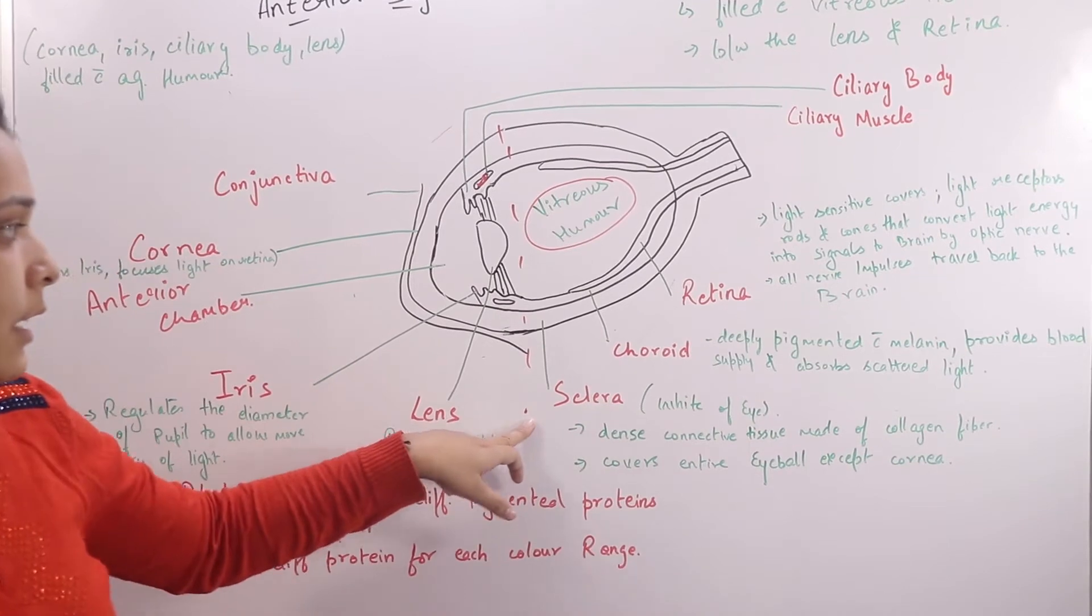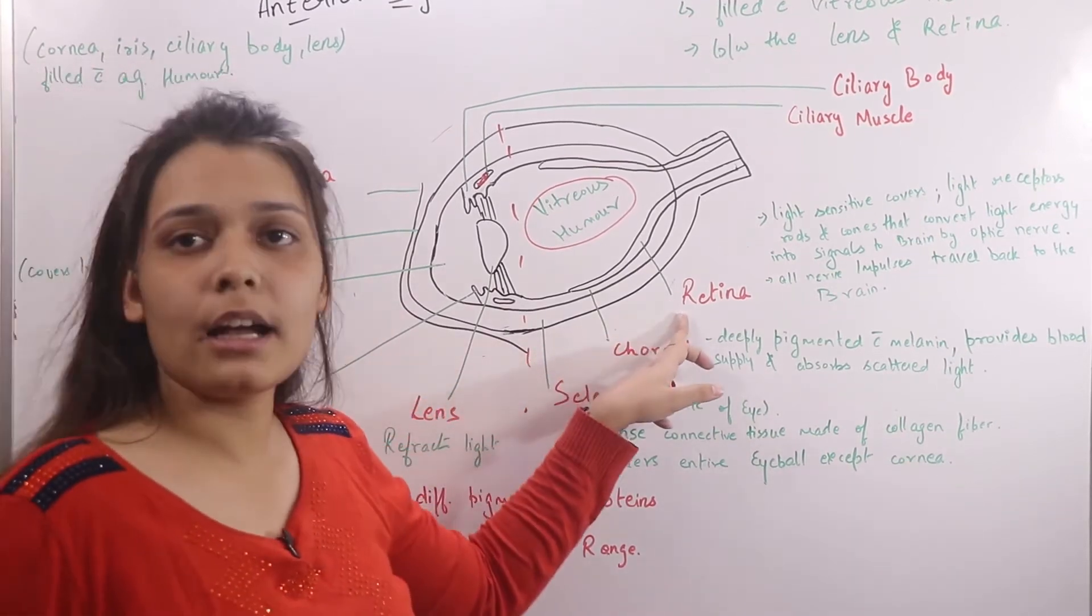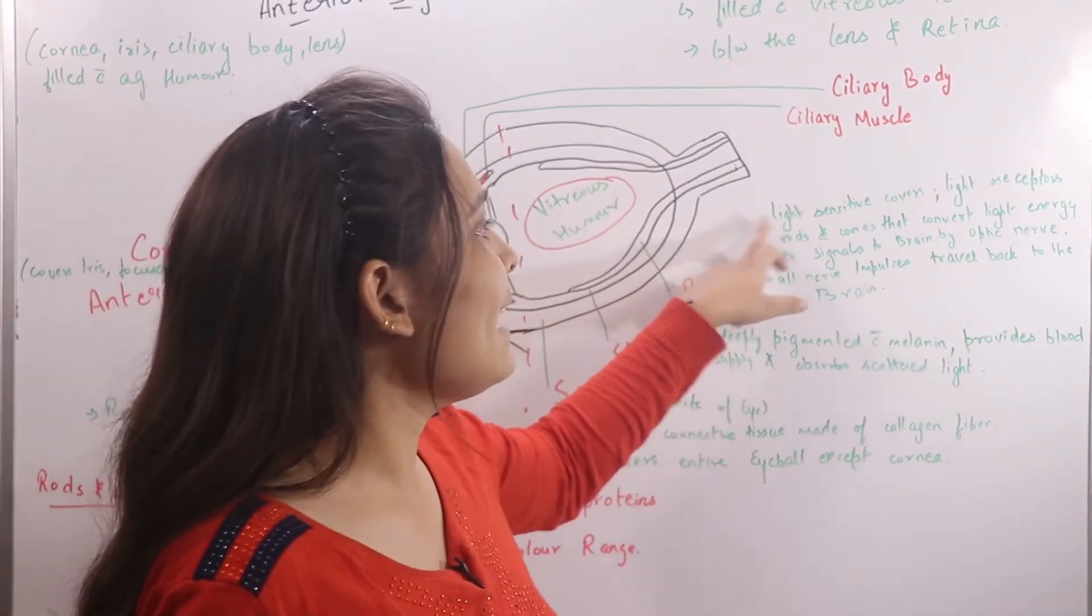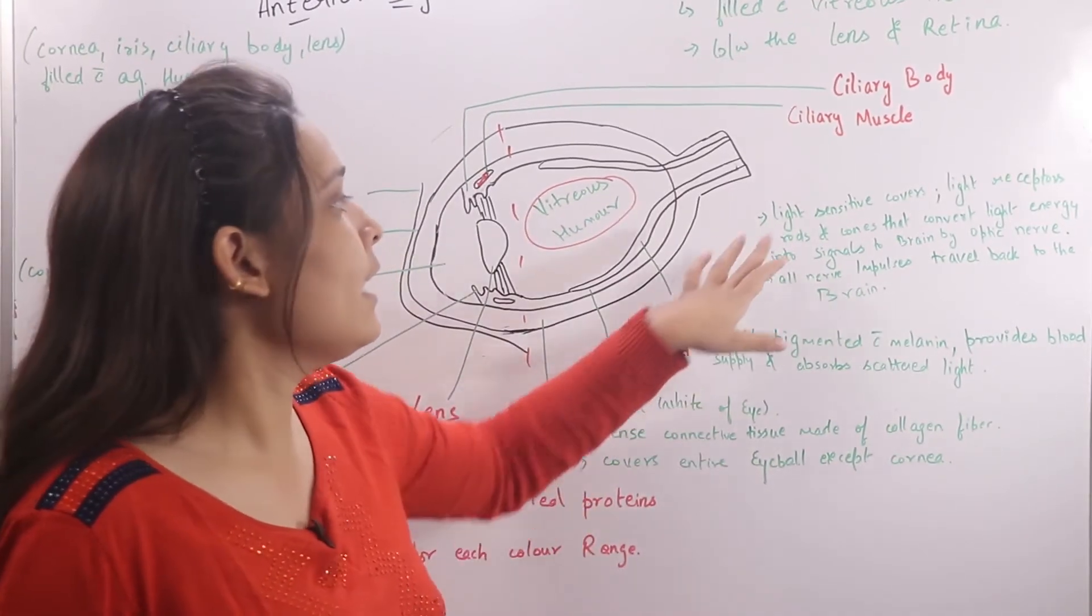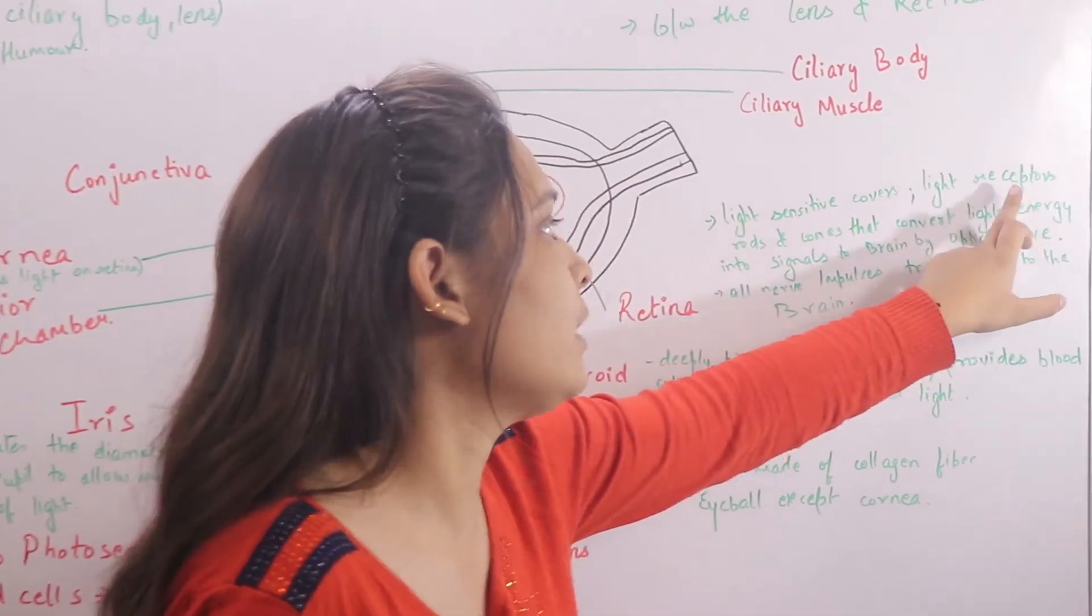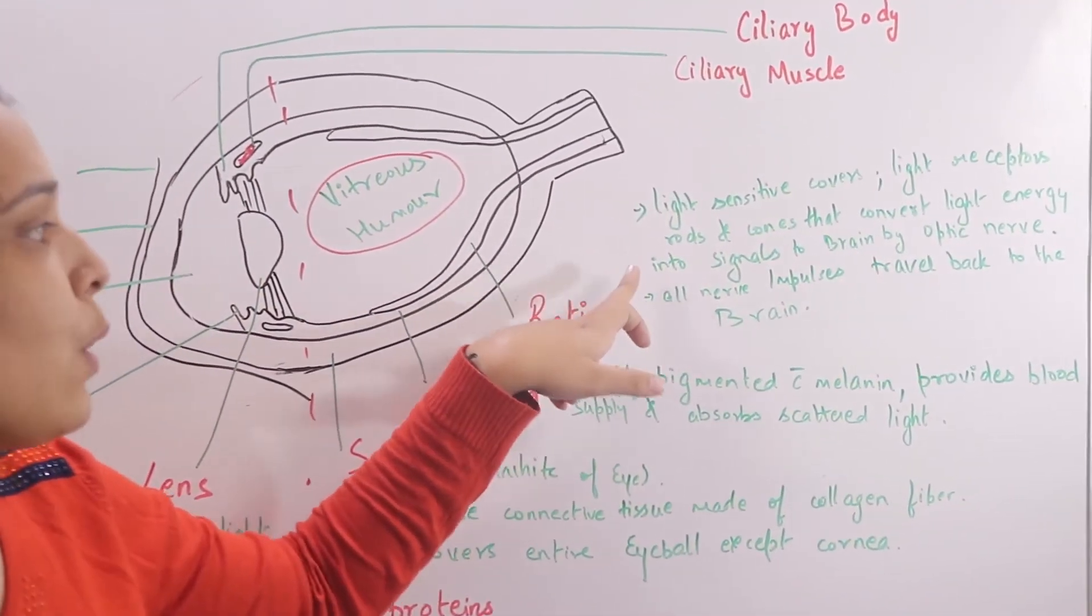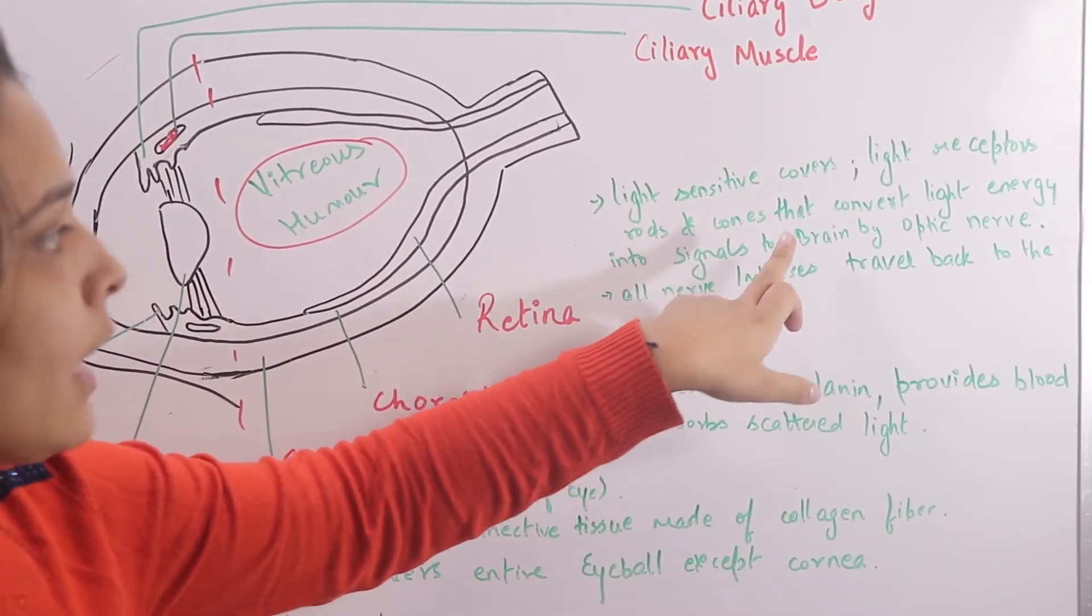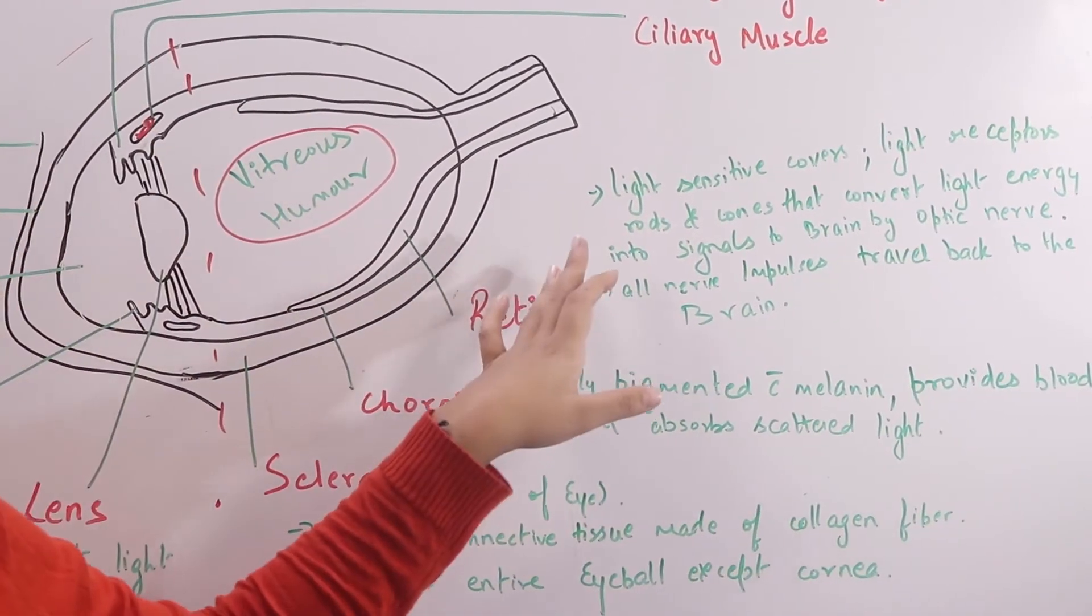The retina is a light sensitive cover. It has light receptors which are called rods and cones that convert light energy. This is the main part.